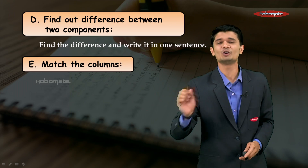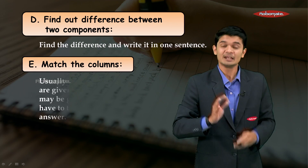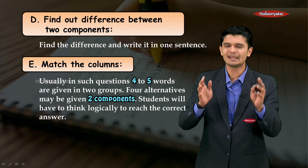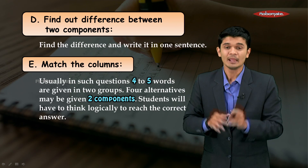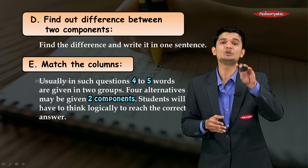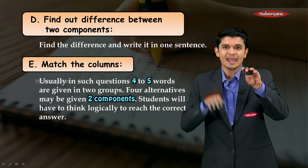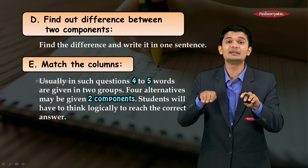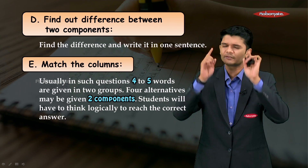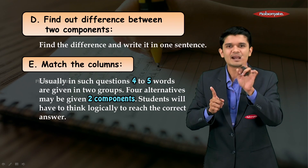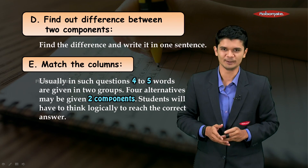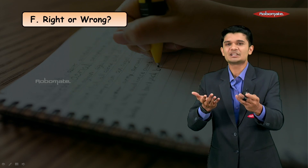The next section is match the following. In match the following, you might have around four to five words across the entire columns. It is also possible that one column might have only two options and the other column might have four alternatives. Think about these alternatives very carefully, find the correct relation, and then complete the match the following.